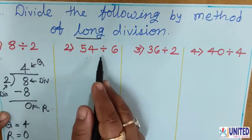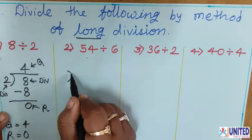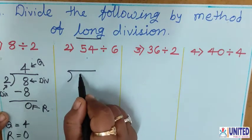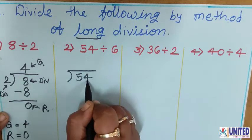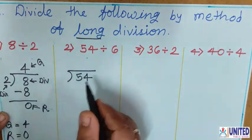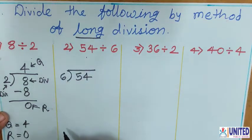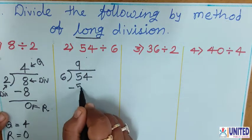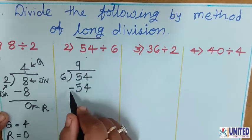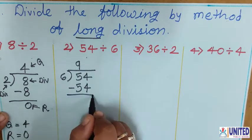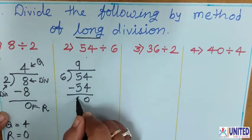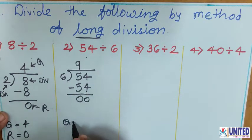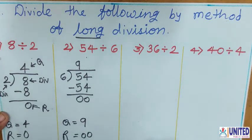Number 2: 54 divided by 6. Make the long division sign. Write 54 inside as dividend, and 6 outside as divisor. Speak the 6 times table until 54 comes — 6 nines are 54. Write 9 at the quotient. Then subtract: 4 minus 4 is 0, 5 minus 5 is 0. So Q equals 9 and R equals 0.